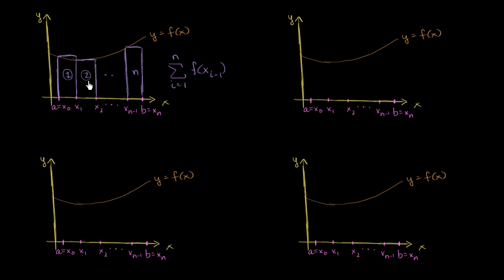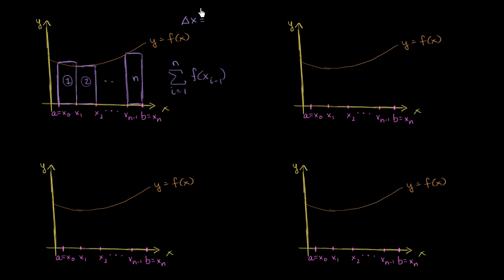If i is 2, then we're evaluating it at x₁ — that's the left boundary. Then we multiply it times the width. We assume all rectangles have equal width, which we call delta x. To find delta x, we take the total distance in the x direction, b minus a, divided by the number of rectangles n. So the sum is times delta x.